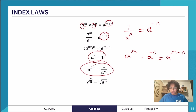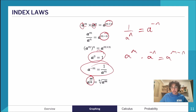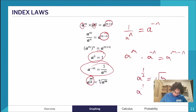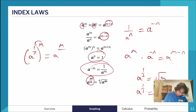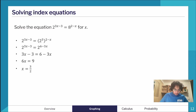If the power is a fraction, it represents a root. For example, a to the power of one half is the square root of a, and a to the power of one third is the cube root of a. If you have something like a to the power of m over n, the m multiplies in and you're left with a to the power of m over n.